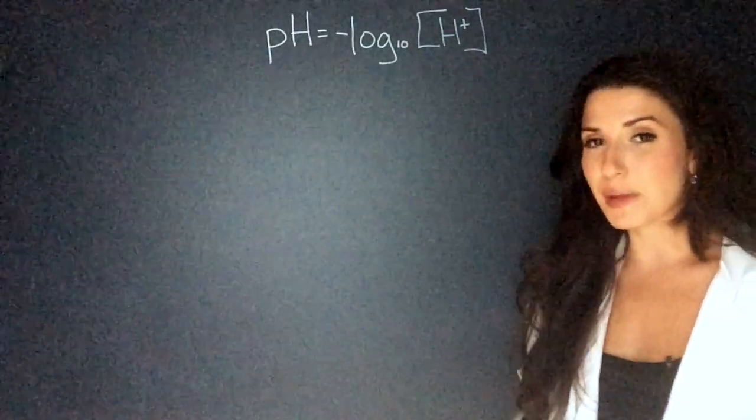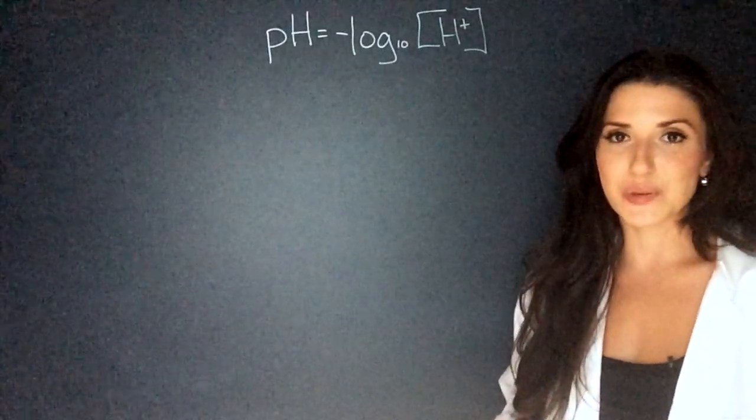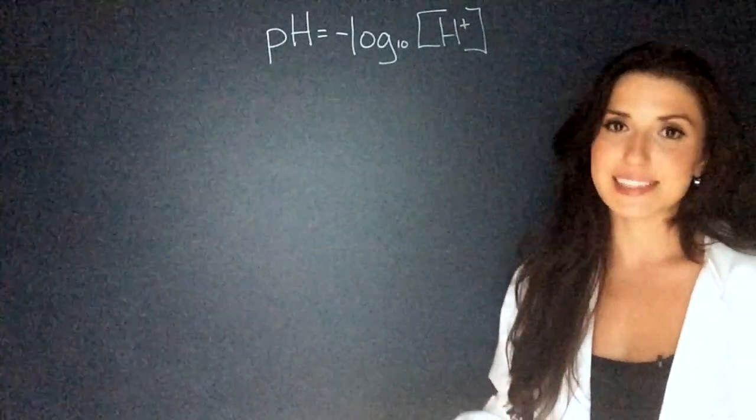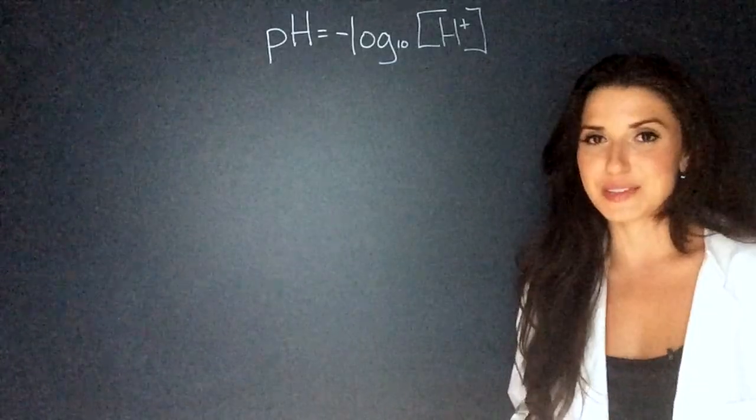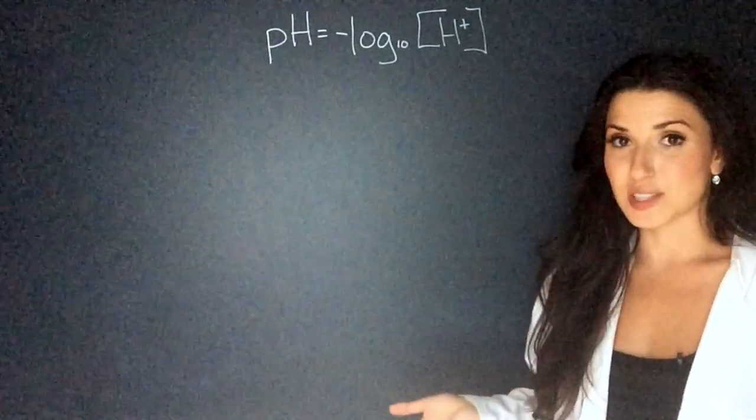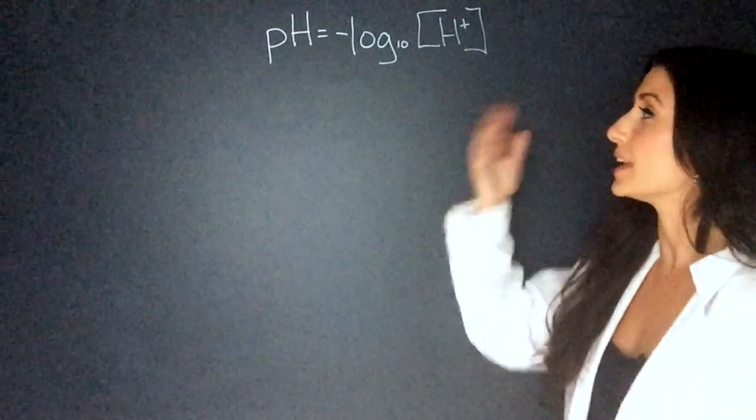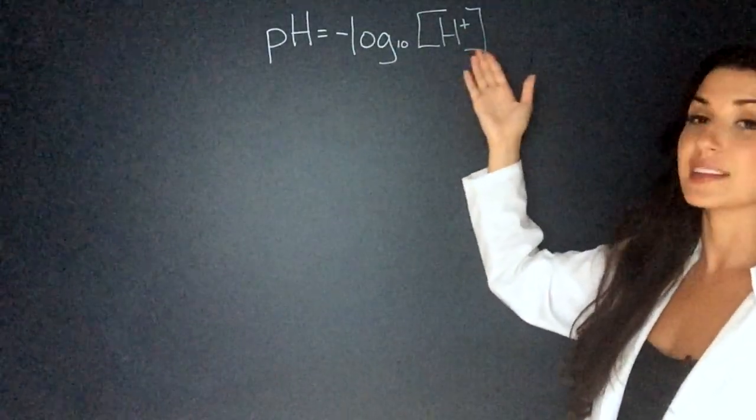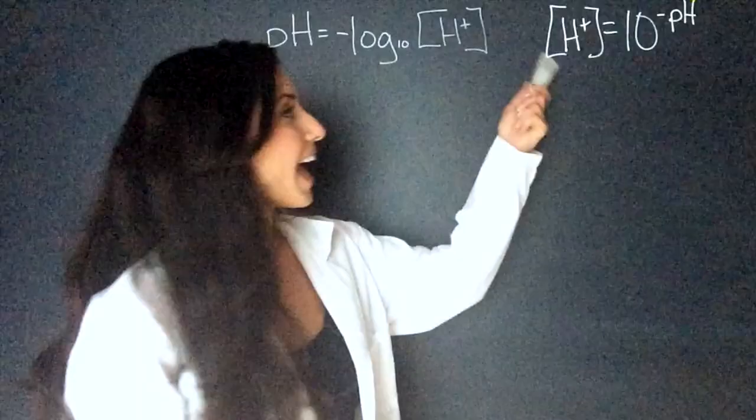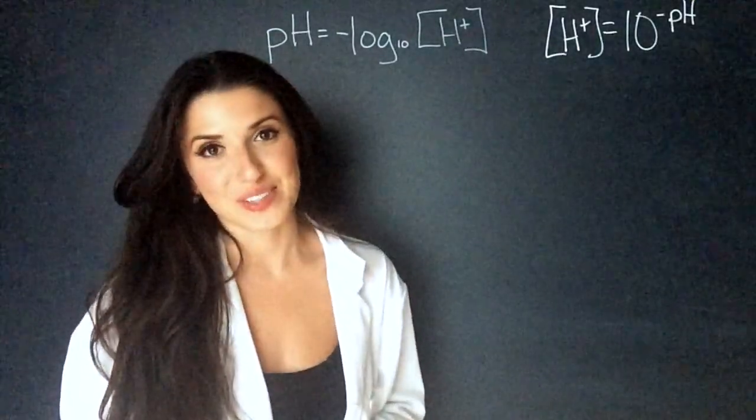I will link my video here on how to find molarity in the basic equation. But we're going to be covering this later in my acid-base videos as well. We can rearrange this equation for a question if we're given the pH and we have to find the concentration of hydrogen. That will look like 10 to the power of the negative pH. And that is how we rearrange this equation.